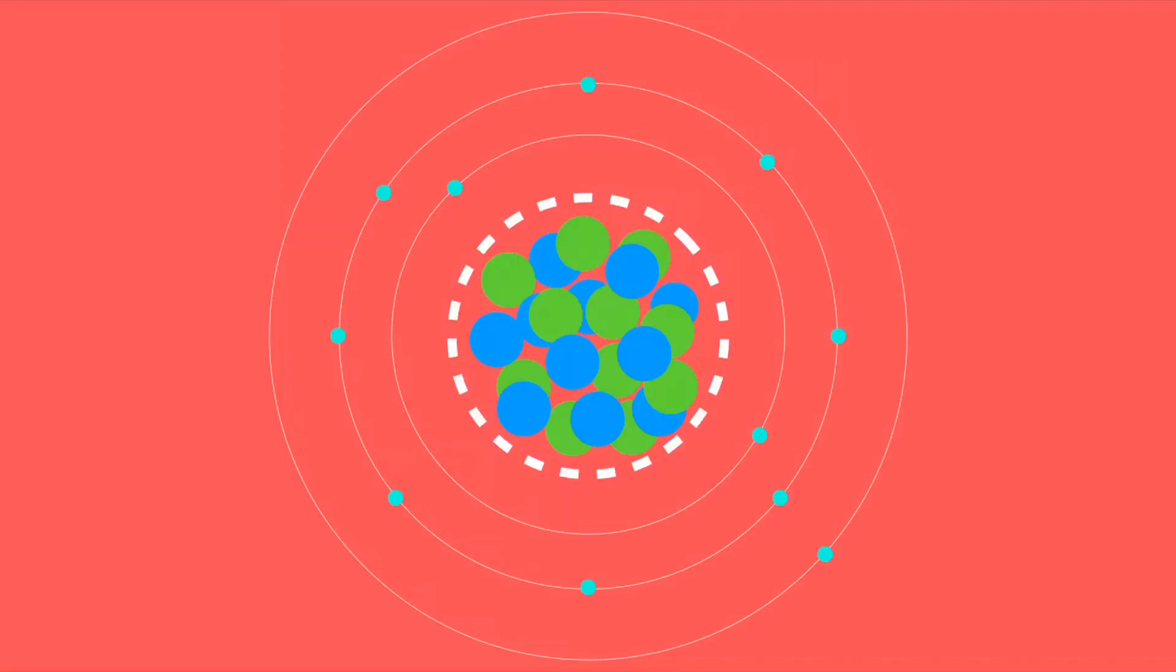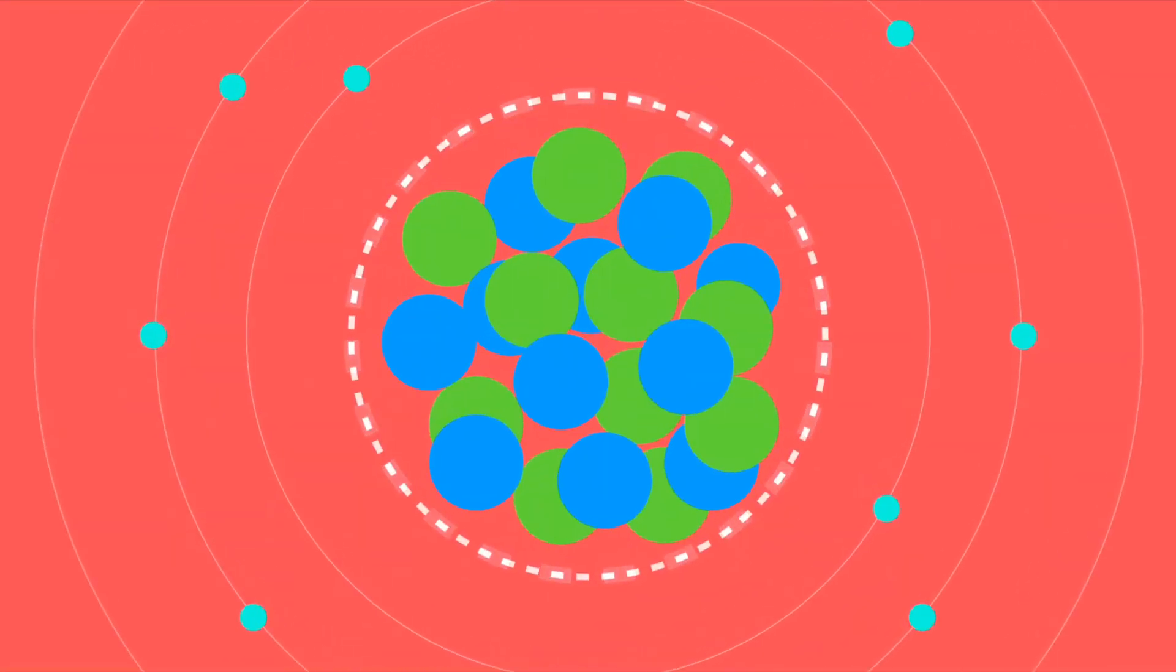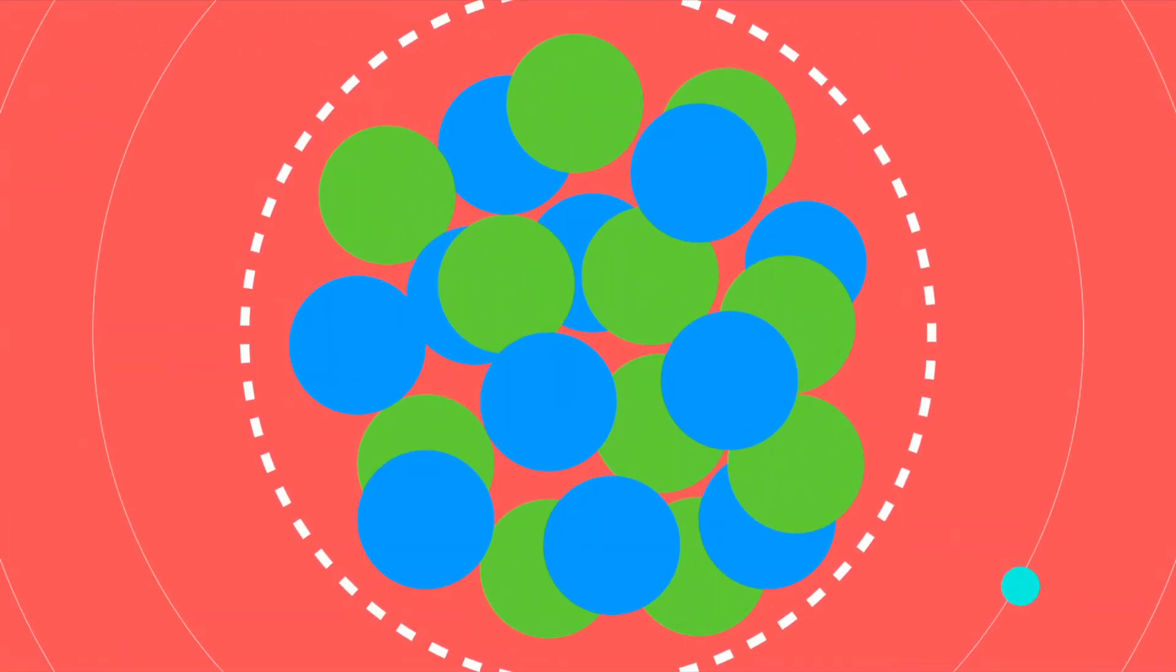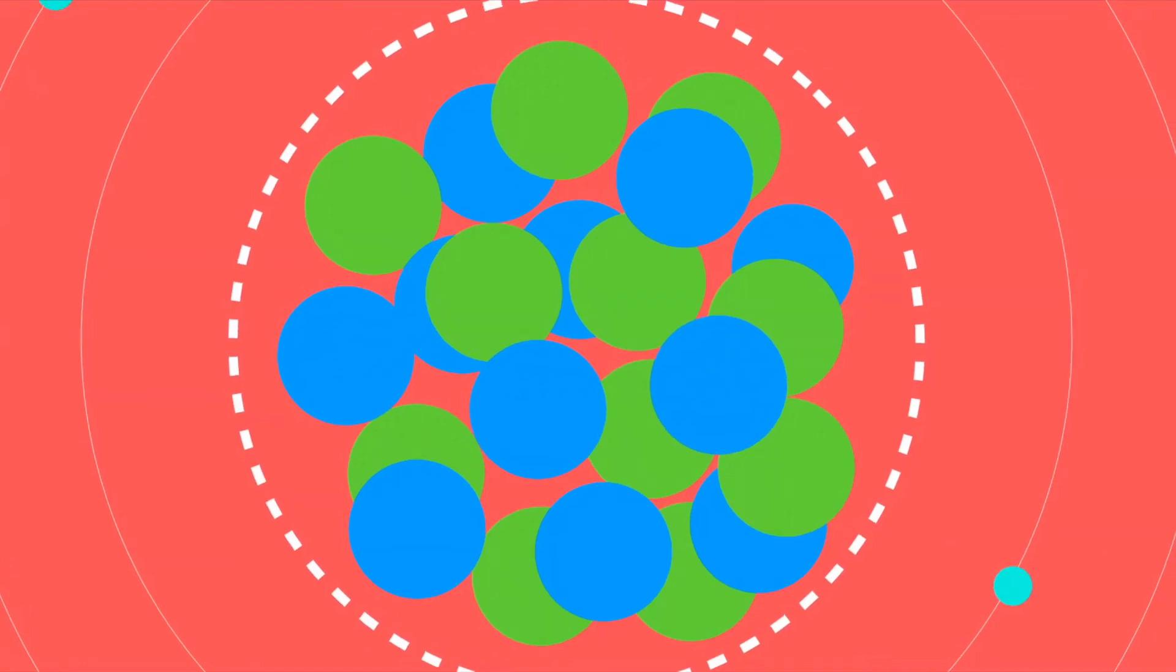This is an atom. More specifically, it's the model of an atom that is very helpful when thinking about radiation and half-lives. It's made up of protons and neutrons in its nucleus, and electrons orbiting the nucleus in orbitals.